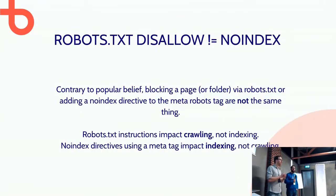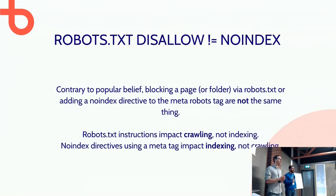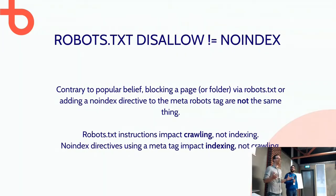Blocking a page or folder in robots.txt does not prevent Google from indexing those pages. It sounds weird, but just because Google can't crawl something doesn't mean it can't index it. If you block a page but somewhere on the internet there's a link to it, Google will probably index that page even though it's not allowed to crawl it. If you want things not indexed, you should never use robots.txt for that alone — Google has to crawl the page to see the noindex instruction.